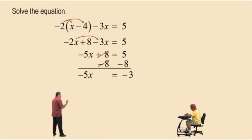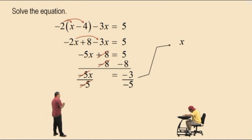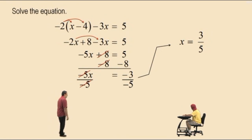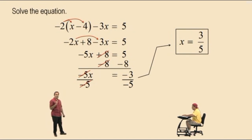Now remember we want a positive 1x, Charlie. So we have negative 5 times x. What do we do to both sides? Divide by negative 5. Divide by negative 5 because negative divided by negative is positive. Left-hand side, we get x. Right-hand side, we have a negative divided by a negative, which is a positive, so our answer is positive 3 fifths. If you want to verify your solution, substitute the x in the original equation with positive 3 fifths and see if you end up with 5 equals 5 at the end.